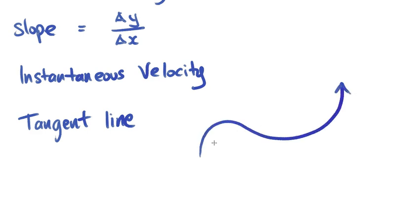versus finding a secant line, which is actually a line through two points.